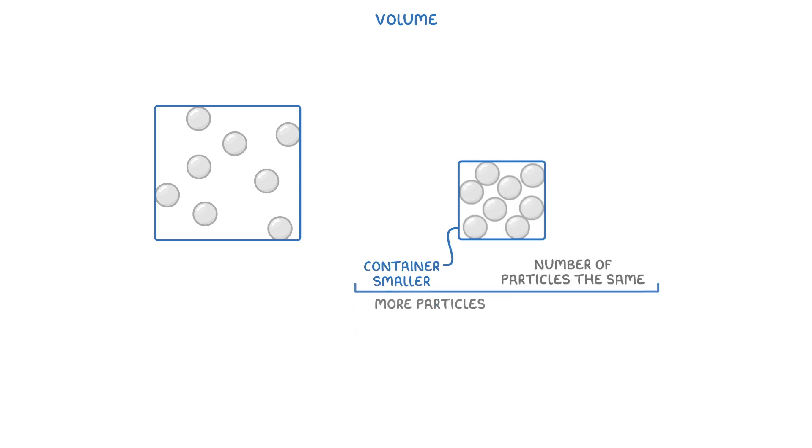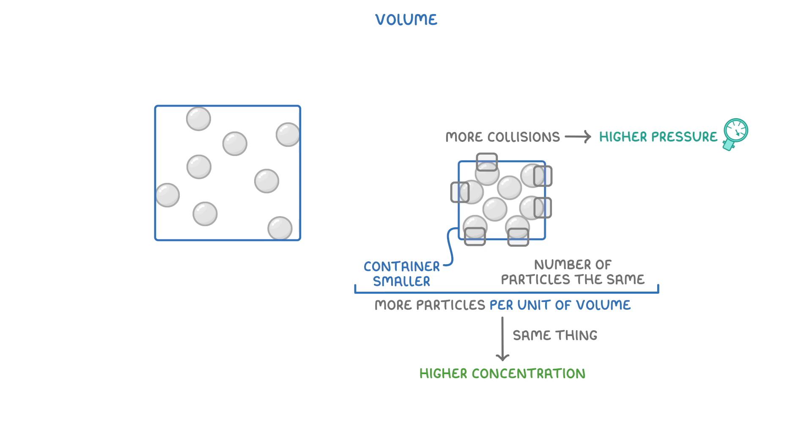Finally we have volume. If we made our container smaller, but kept the number of particles the same, then there would effectively be more particles per unit of volume, which is actually the same thing as saying there's a higher concentration of particles. As the particles no longer have as far to travel between each collision, there now could be more collisions, meaning a higher pressure. So as volume decreases, pressure increases.